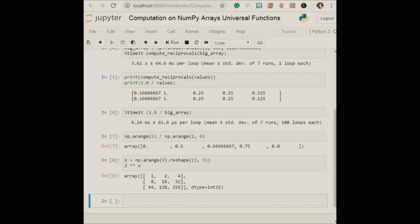So computations using vectorization through ufuncs are nearly always more efficient than their counterpart implemented through Python loops, especially as the arrays grow in size. Anytime you see such a loop in a Python script, you should consider whether it can be replaced with vectorized expression.